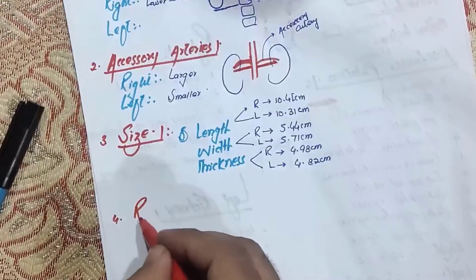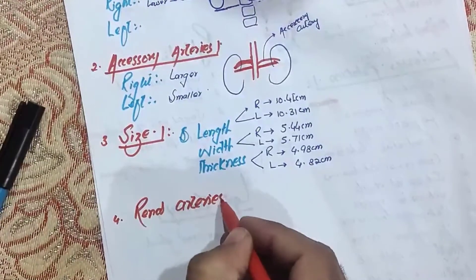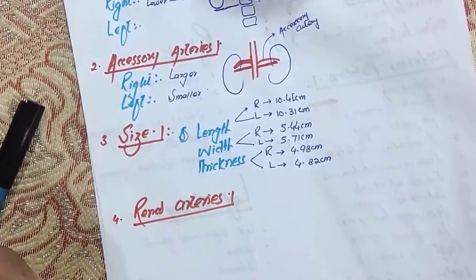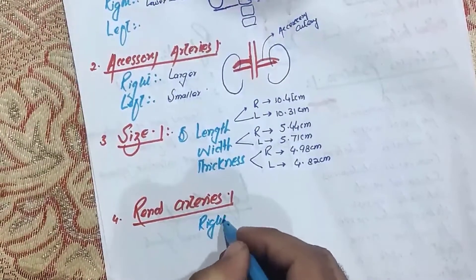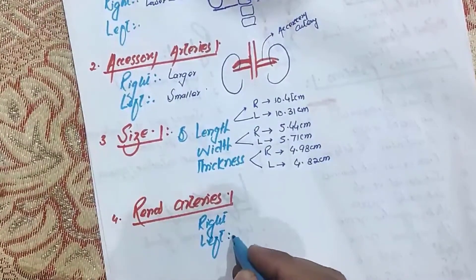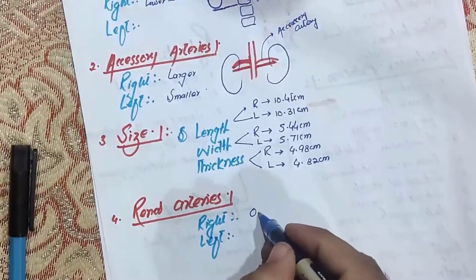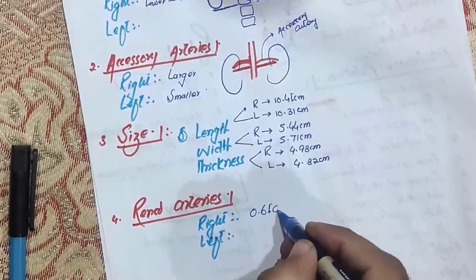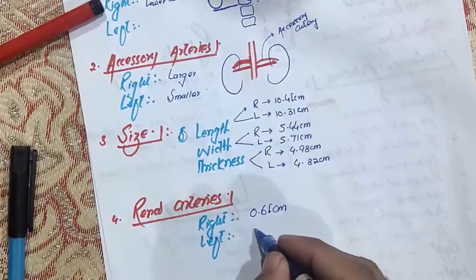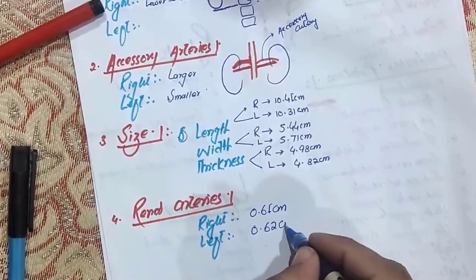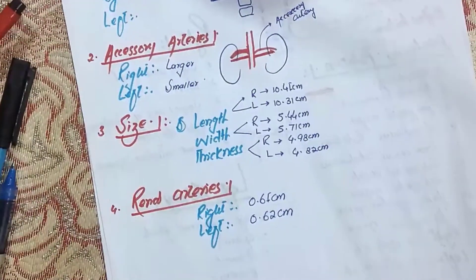The fourth difference is in the renal arteries. The diameter of the right renal artery is about 0.61 cm, while the diameter of the left renal artery is about 0.62 cm. This is the difference in the renal artery diameters of both kidneys.